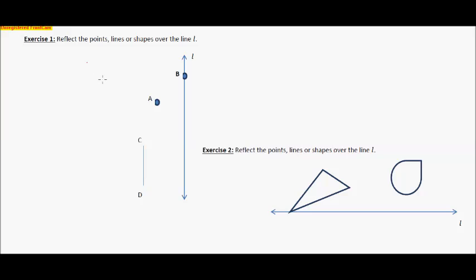Today is about reflections and we're going to have to do this a little different way. What we're doing in the first two examples is we're going to reflect point B, point A, and line segment CD over this line L. Similar to when we did translations. We're also going to reflect this triangle and this teardrop kind of shape over this line L right here.